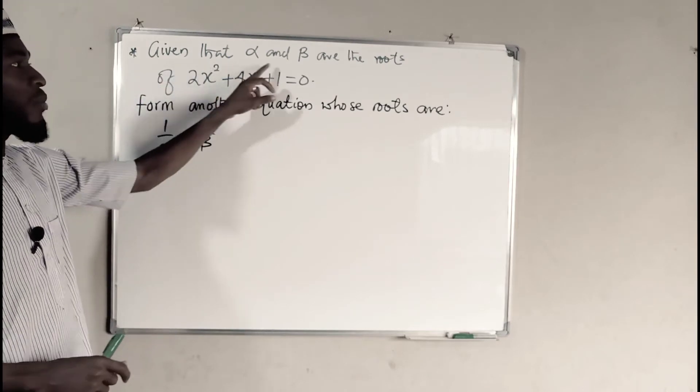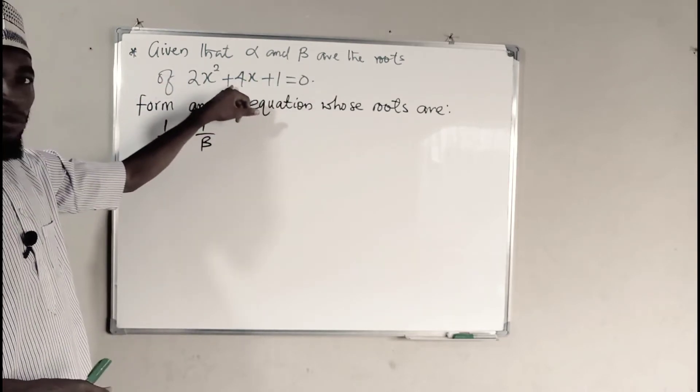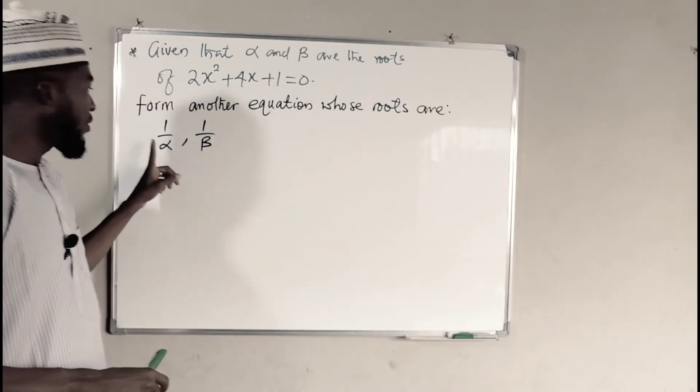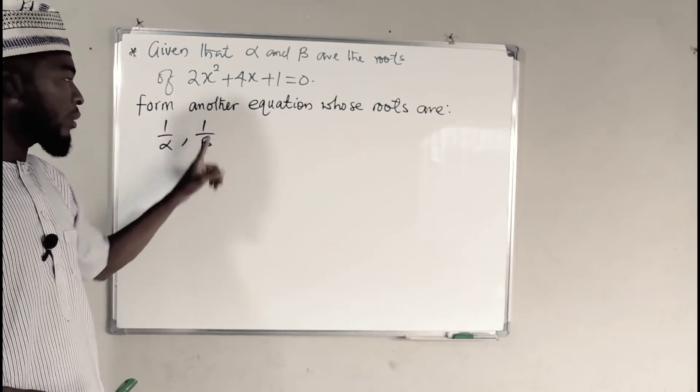We are given that if alpha, beta are the quadratic roots of this quadratic equation, we are asked to form another quadratic equation whose roots are 1 over alpha and 1 over beta.